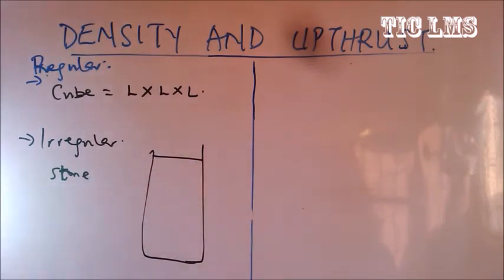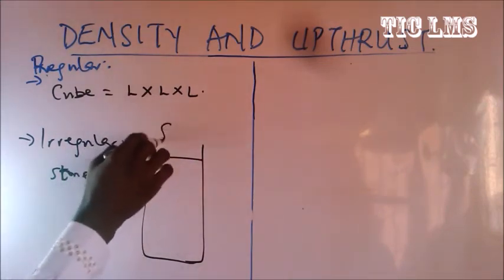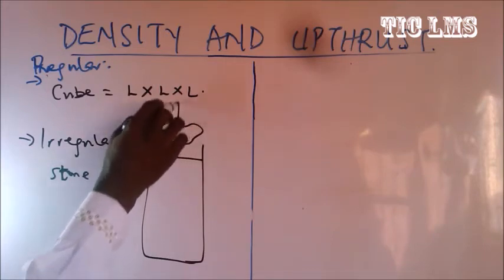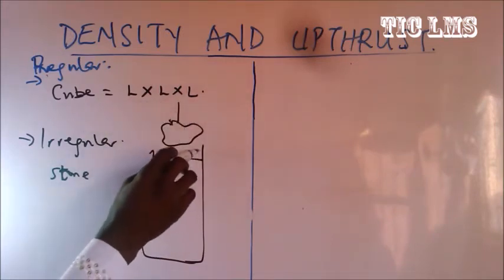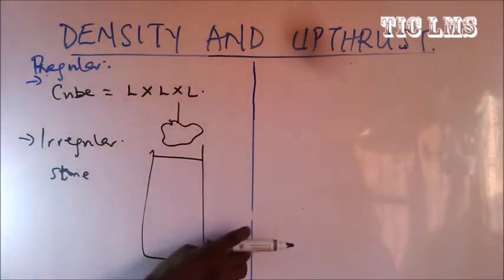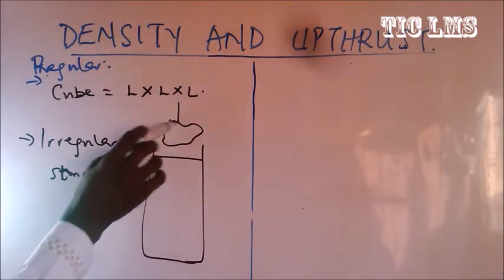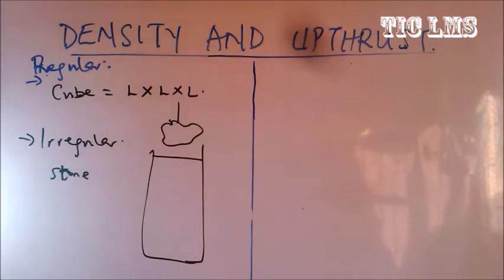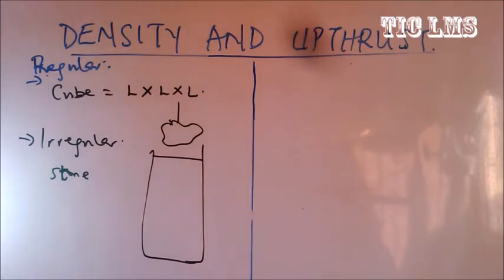When we have an irregular solid like a stone, to calculate the volume we use a measuring cylinder containing some quantity of water. The cylinder is graduated, so when you drop the irregular-shaped body inside, it displaces some volume of water. That volume of water displaced equals the volume of the body. Then we measure the mass using a beam balance and calculate the density.